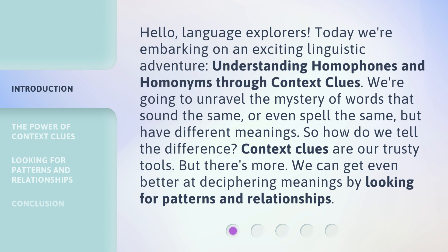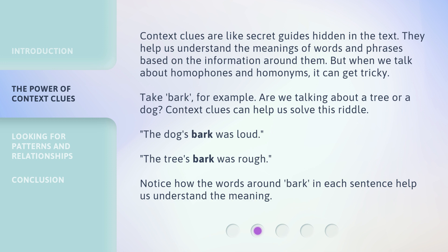But there's more — we can get even better at deciphering meanings by looking for patterns and relationships. Context clues are like secret guides hidden in the text. They help us understand the meanings of words and phrases based on the information around them. But when we talk about homophones and homonyms, it can get tricky. Take 'bark,' for example. Are we talking about a tree or a dog? Context clues can help us solve this riddle. 'The dog's bark was loud.' 'The tree's bark was rough.' Notice how the words around 'bark' in each sentence help us understand the meaning.